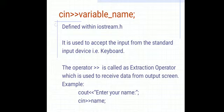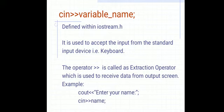cin is similar to scanf in C. The syntax is: cin, then the extraction operator, then the variable name. It is also defined within iostream.h and is used to accept input from the standard input device, that is the keyboard. The double greater-than sign is called the extraction operator, which is used to receive data from the user. For example: cout insertion operator 'Enter your name:' semicolon, then cin extraction operator name. This is similar to printf and scanf in C: printf 'Enter your name:' semicolon, and scanf with the variable name in brackets.